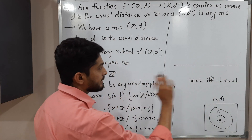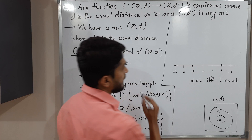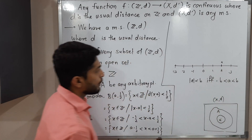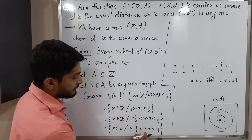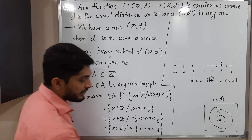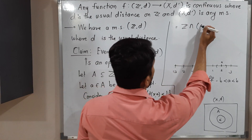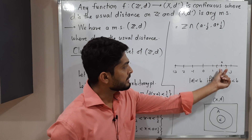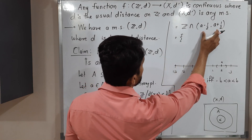Basically a is an integer. Suppose our a is 2. Then a − 1/2 = 3/2 and a + 1/2 = 5/2. We want the collection of all integers lying in this interval. The same thing we can write as Z ∩ (a − 1/2, a + 1/2). From the diagram, we can easily see that if a is an integer, then in this interval only a itself is the only integer. Therefore, the integer lying in this interval is the singleton {a}.